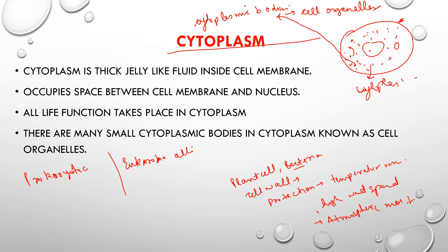We were discussing prokaryotic and eukaryotic cells. Prokaryotic cells neither contain a well-defined nucleus nor any internal membrane. These cells have descended from the oldest form of life on earth.